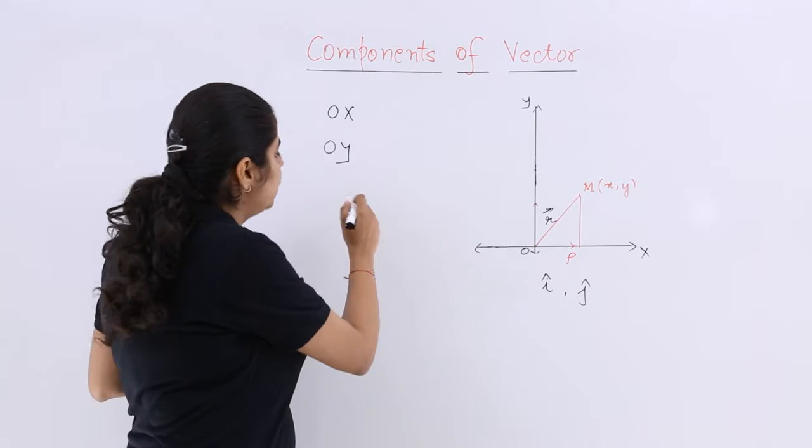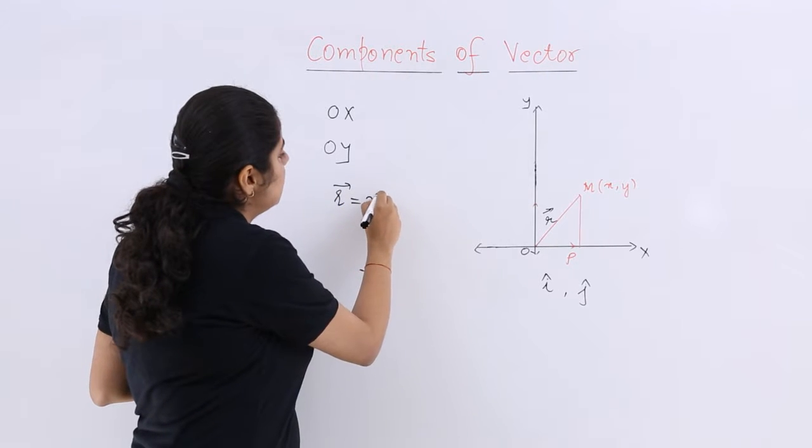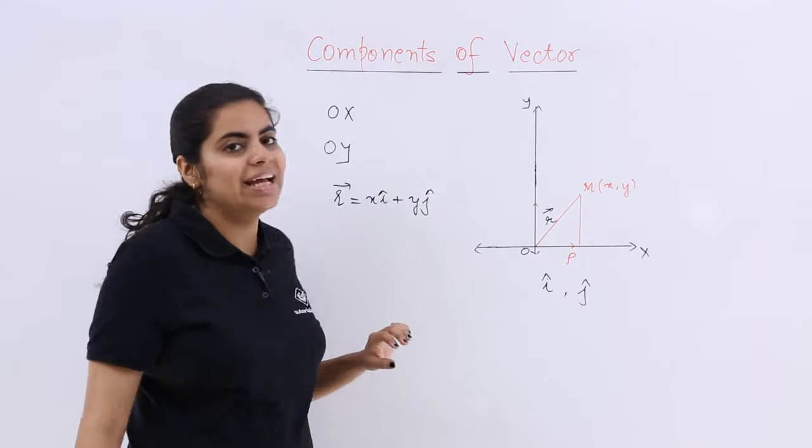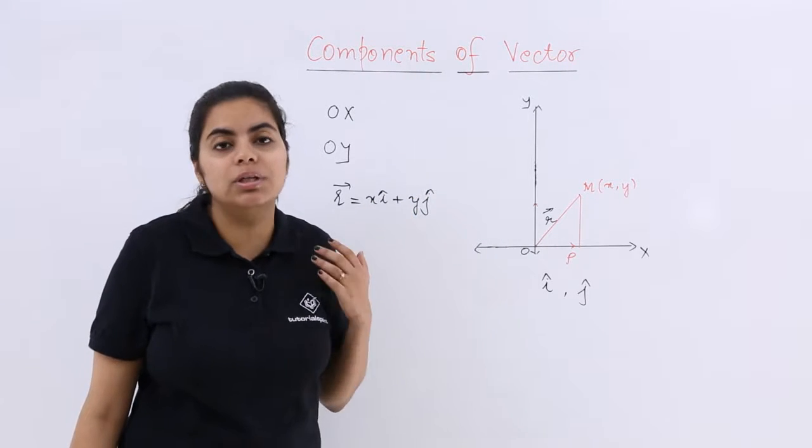So how to write it? I write r vector is equal to x i cap plus y j cap. This is how you write it where i and j cap are the rectangular components.